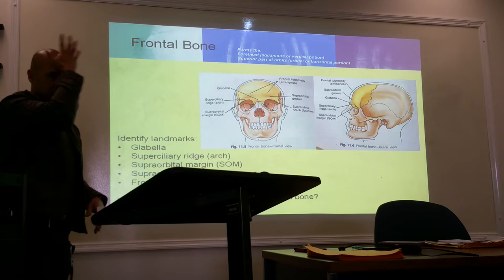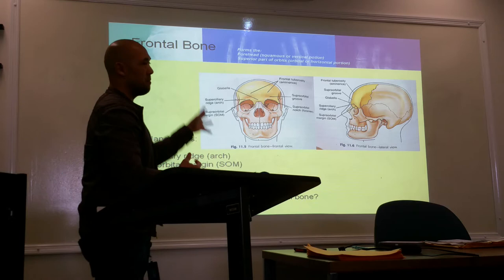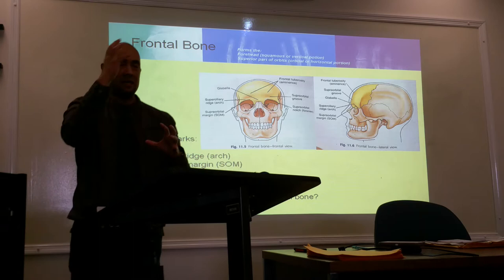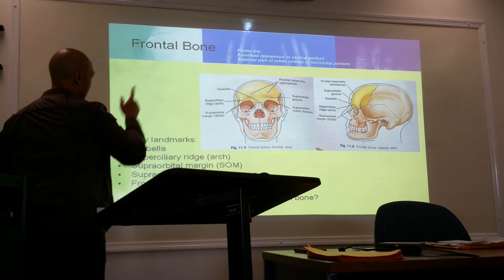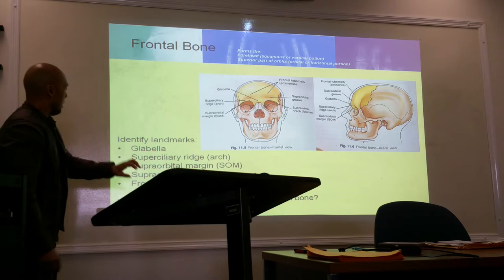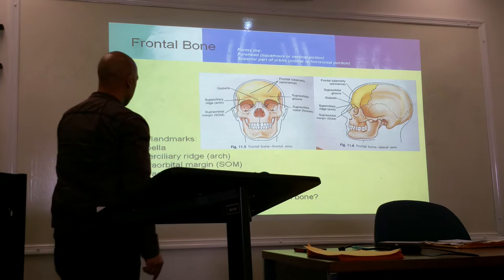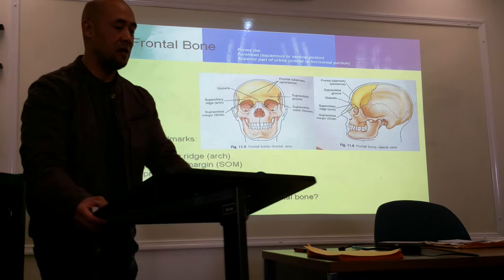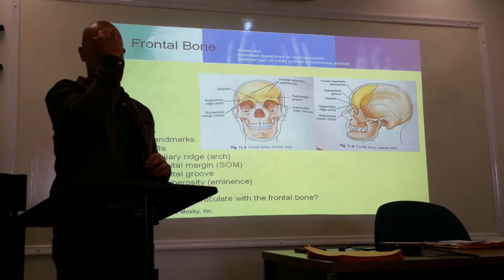The frontal bone — your forehead — forms two parts. The forehead is the squamous or vertical portion, and the superior orbital part is the horizontal portion. 'Squamous' just means the flat portion of that bone. Key bony landmarks include the glabella, which is the area between your eyes where the bridge of your nose ends.